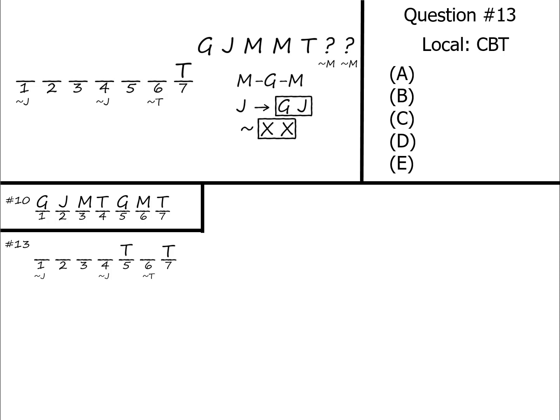Now this is going to have two immediate effects. The first is it's going to block T from spaces four and six because if there's a T in five and seven, you can't have T's consecutively. It's also going to block J from slot six because J has to have a G in front of it. So it can't go into slot six by itself. There would be a T in front of it.